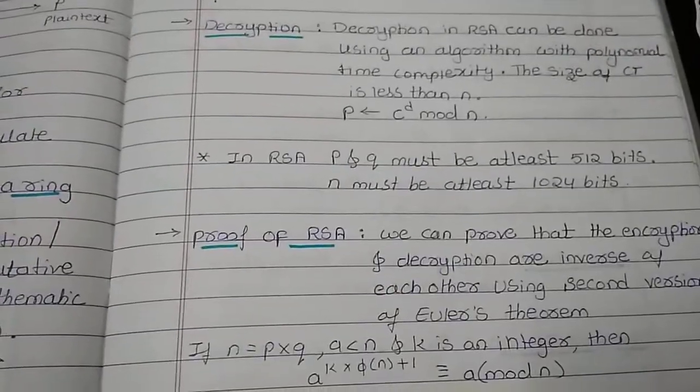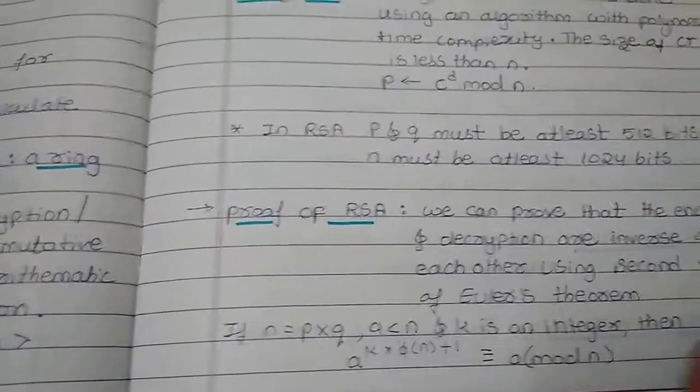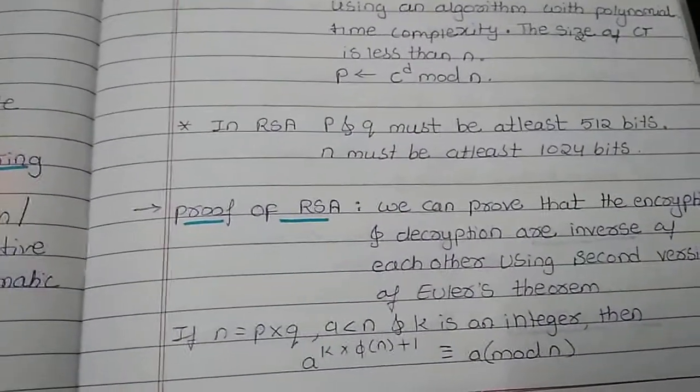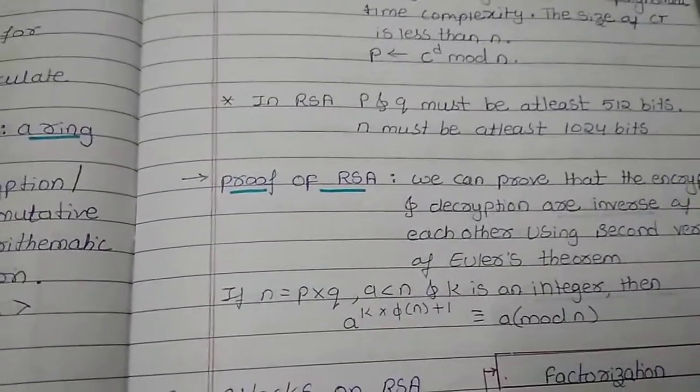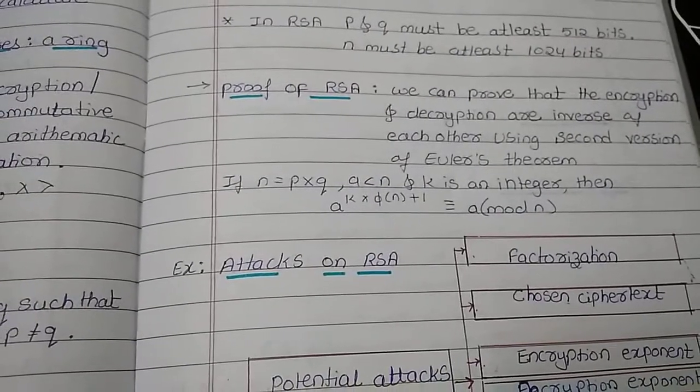Whenever we are choosing the value of P and Q it must be at least 512 bits and N must be at least 1024 bits. The proof of RSA can be obtained by using the second version of Euler's theorem.